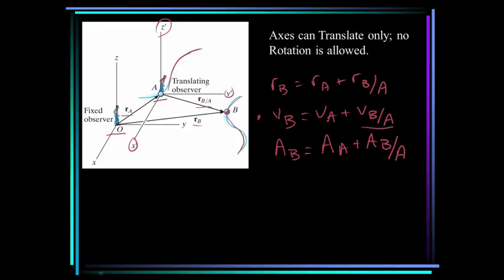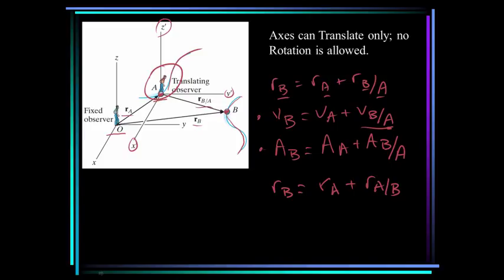What do we mean by velocity of B with respect to A? A means the observer is at A and he's observing particle B in motion. So the velocity of B with respect to A would be: what is the velocity of B with respect to me, even though I am moving as well? Note the order of the subscripts: B, A, B, A — that's how you remember it. R_B equals R_A plus R_{B/A}. Writing it as R_A with respect to B would be wrong.